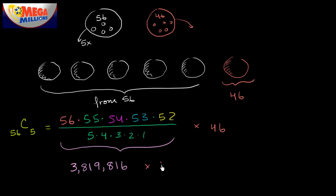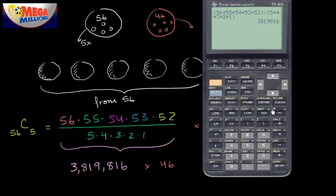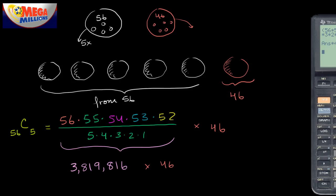So you're going to multiply that times 46. And so that's going to get you, so when you multiply it times 46, bring the calculator back. So we're going to multiply our previous answer times 46. I get a little under 176 million. A little under 176 million.